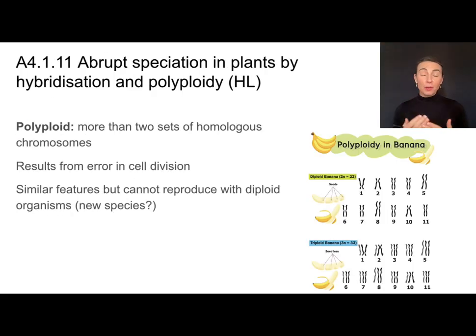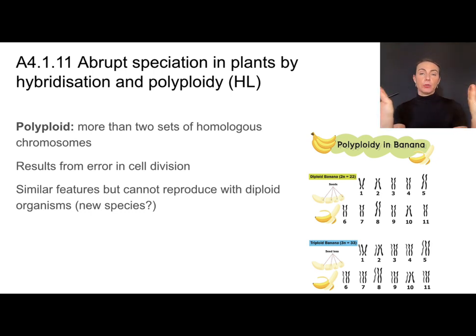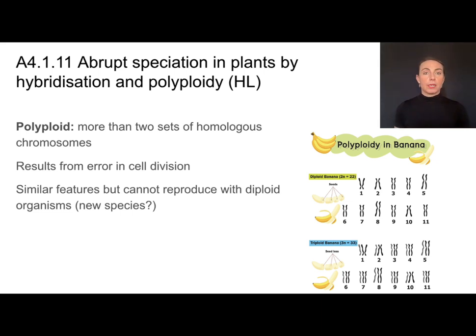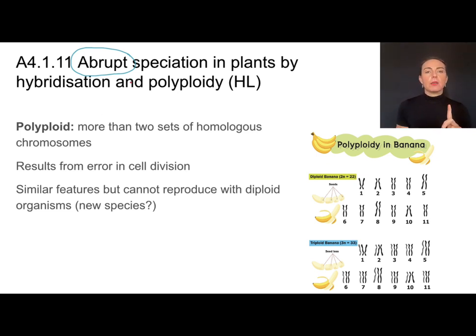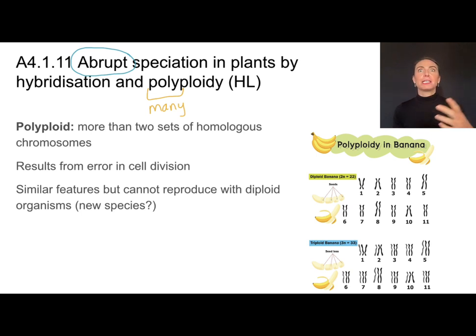It takes a long period of time — many generations — for reproductive isolation to lead to new and distinct species. But there are cases where the speciation process can be very abrupt, meaning it happens suddenly. Hybridization is one way, taking different species to make new varieties. The other is something called polyploidy. The prefix 'poly' means many, and 'ploid' refers to chromosome number — like diploid, haploid, tetraploid, or octoploid.